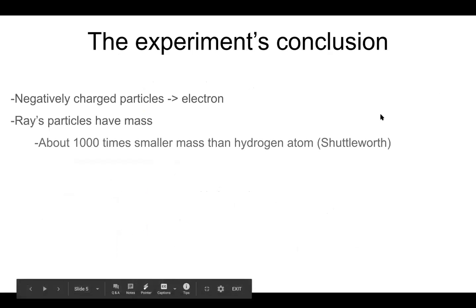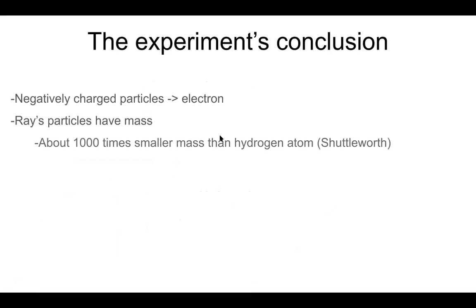The experiment's conclusion is that the ray, which is made out of atoms, has negatively charged particles — specifically electrons. He figured out the ray's particles have a mass about 1,000 times smaller than a hydrogen atom, which was the smallest-massed atom. He figured this out with the mass-to-charge ratio equation.